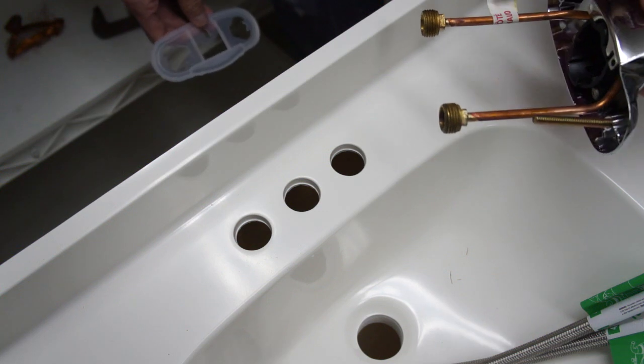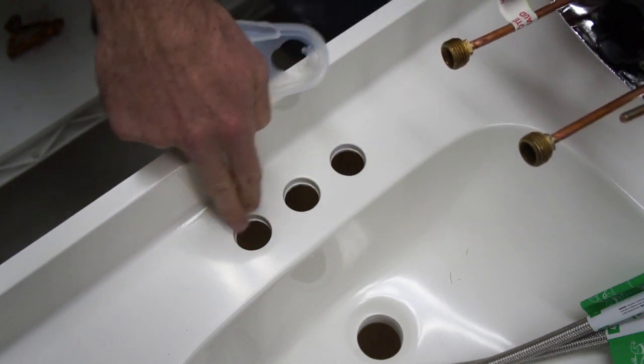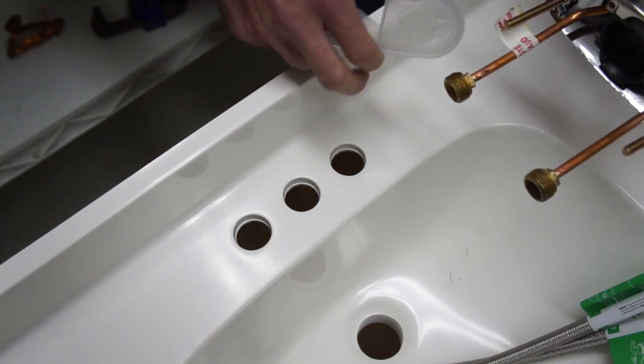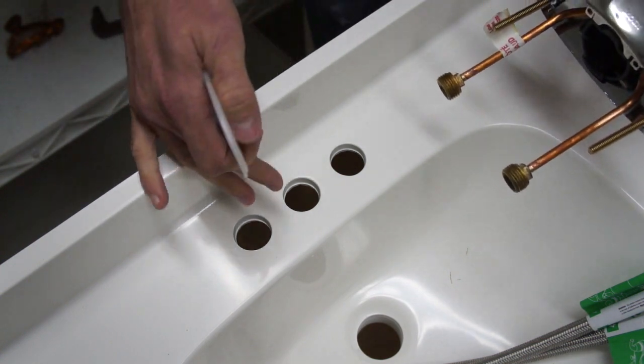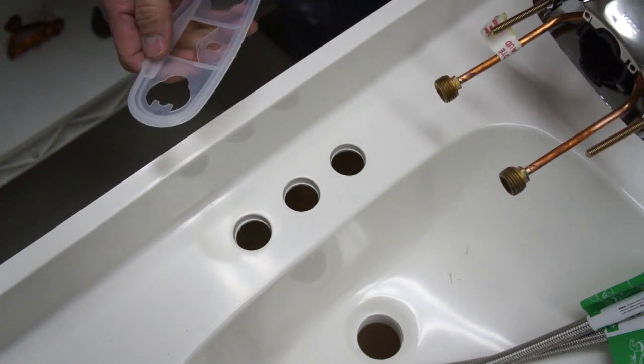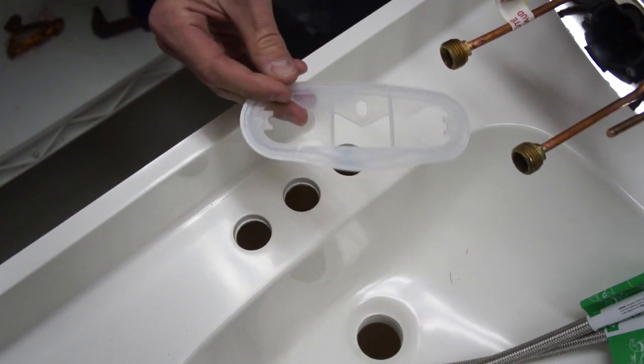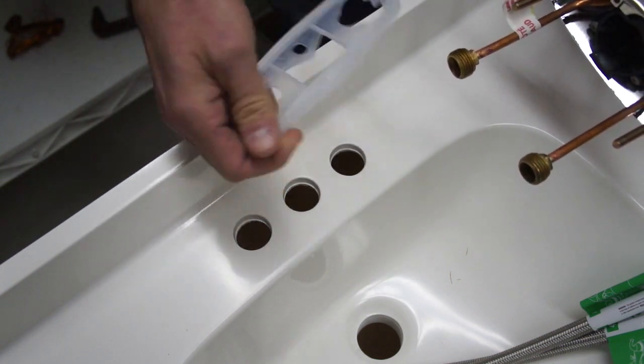Okay, the first thing you're going to want to do is get your faucet in the holes. So this is a standard three-hole setup on a bathroom vanity. They pretty much all come that way unless you're getting a single-hole faucet, in which case you'll be a custom kind of deal.